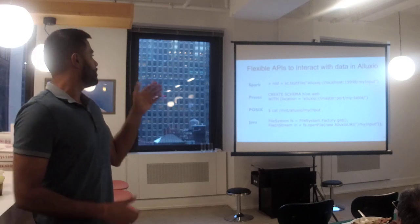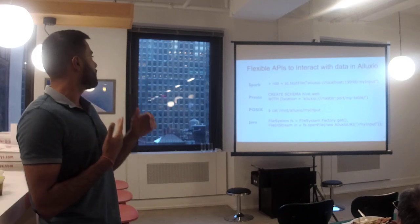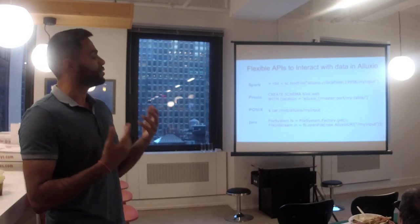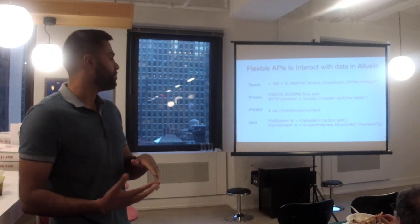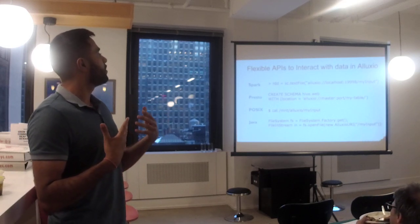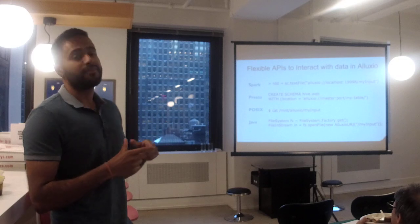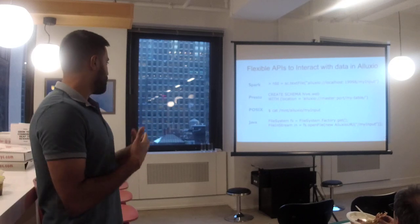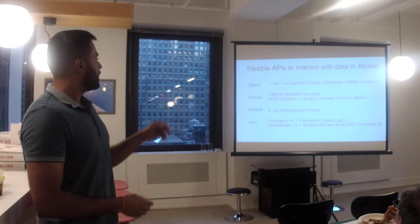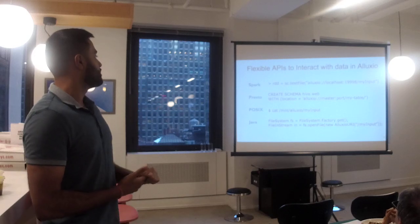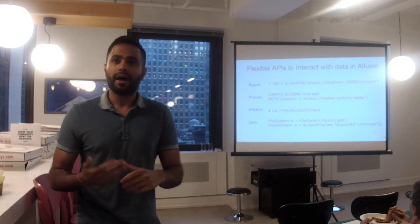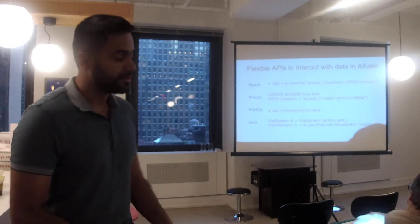One of the key things is having flexible APIs with minimal code changes required for your application to work with Alluxio. If you have Spark, Alluxio can be taken in as traditional RDDs that Spark is accustomed to working with. For Presto, we can have the file location specified as the external table for the Alluxio namespace. And in things like POSIX and Java, we can have traditional open-file operations on files in the Alluxio namespace.